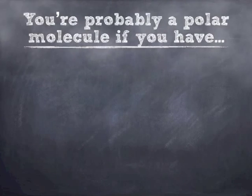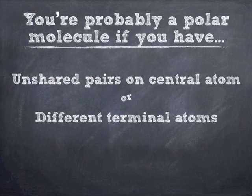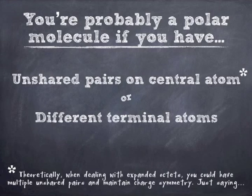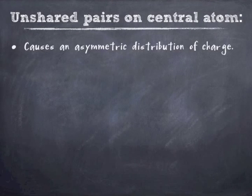And so you're probably a polar molecule if you have one of these two situations, and that's unshared pairs on the central atom, or different terminal atoms coming off the central atom. If you see either one of those, you're probably going to be polar. Now I am going to put a little disclaimer in here for the people who have done five or six clouds. Theoretically, you could have multiple unshared pairs in five or six clouds creating charge symmetry, but we're going to skip that for now because we've only gone up to two, three, or four clouds. So if you do only have two, three, or four clouds, and you have unshared pairs in those clouds on the central atom, you're going to end up with an asymmetric distribution of charge, no matter what.